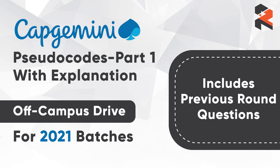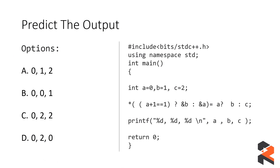Before we look at the questions, I would like to ask you to subscribe to the channel if you haven't already, and join our Telegram group — all links are mentioned in the description box below. So let's get started. In this question you have to predict the output for the given set of code.